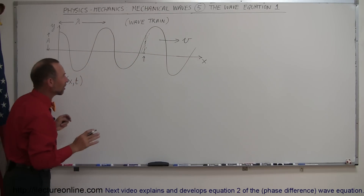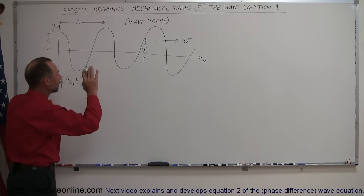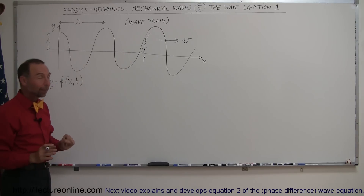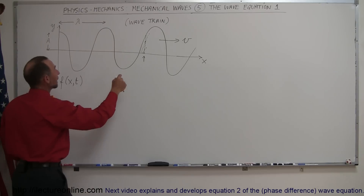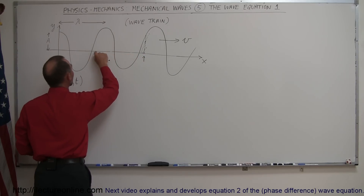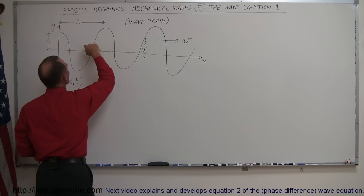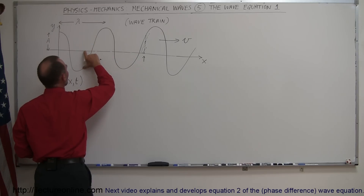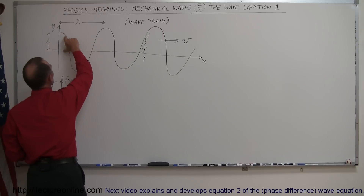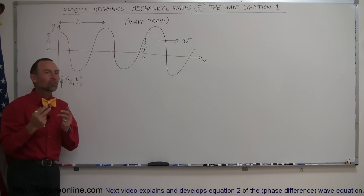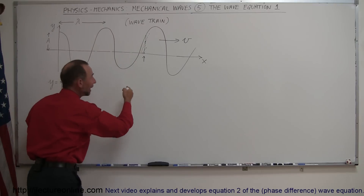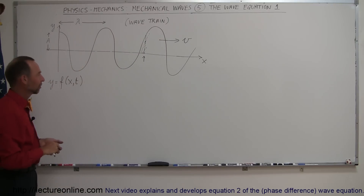On the other hand, if I take a snapshot — fixing the wave at this moment in time without letting any time elapse — and go to different locations on the x-axis, the displacement varies by position. Over here my displacement is this much; over there it's this much in the negative direction; further along it's this much in the positive direction. So the displacement y does depend upon where you are in the x-position and how much time has elapsed.